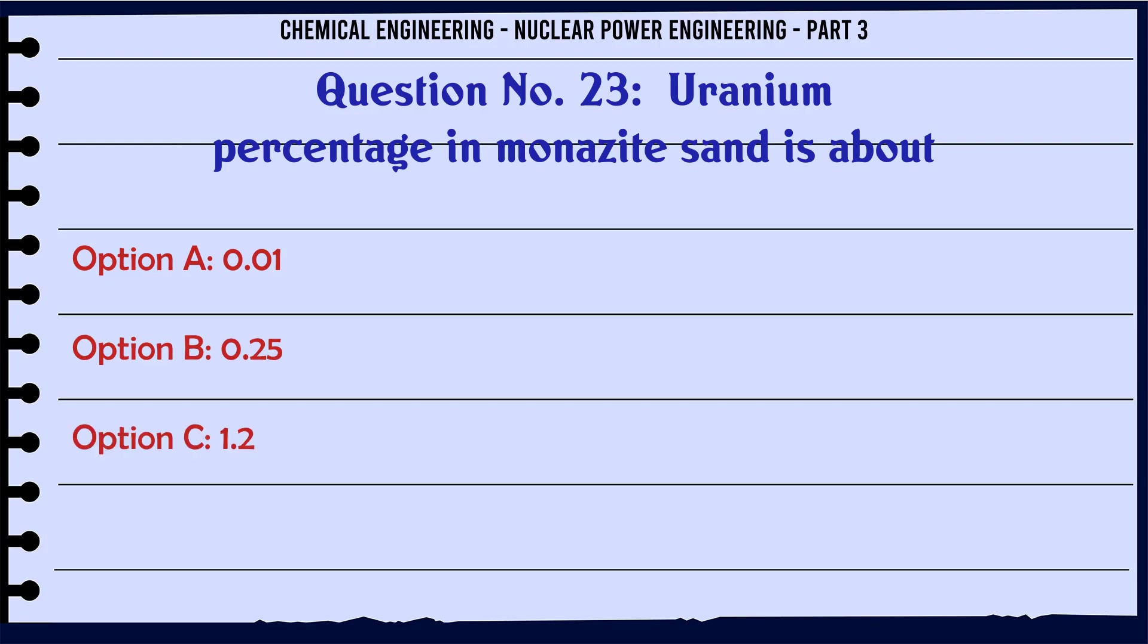Uranium percentage in monazite sand is about 0.25%. The correct answer is 0.25.